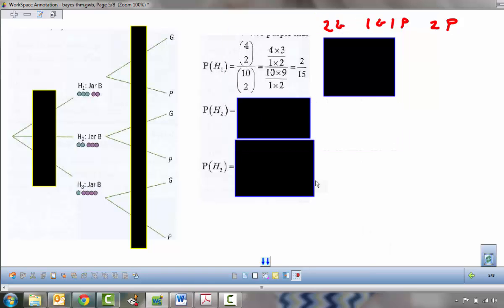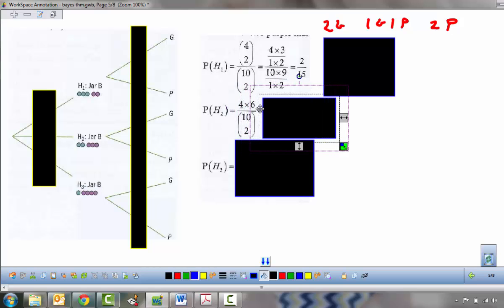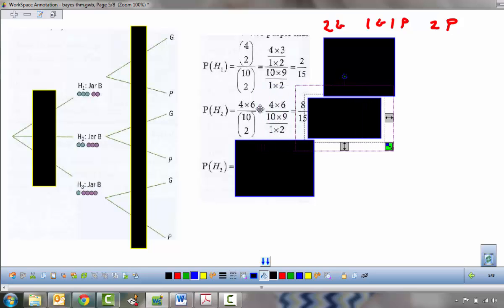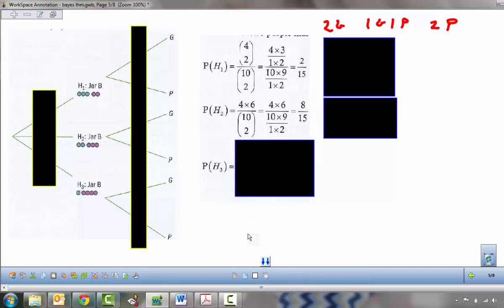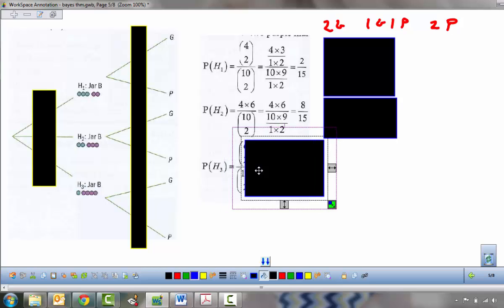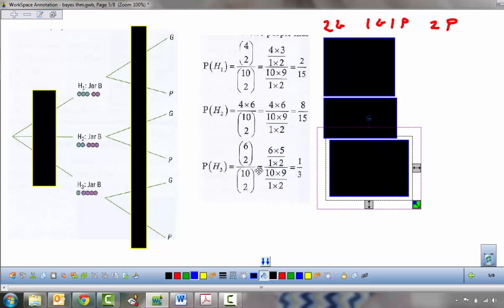Give hypothesis 2 a try right now. Try and use the same sort of notation as here and find a probability for this. And if you're feeling bold, for hypothesis 3 also. So this one has 4 times 6 on the top. That's really 4 choose 1 and 6 choose 1 because we're choosing one green and one purple. 10 choose 2 is still on the bottom. Our probability is 8 fifteenths. And then the probability of hypothesis 3. 6 choose 2 divided by 10 choose 2. Or a probability of one third.